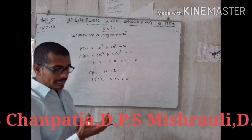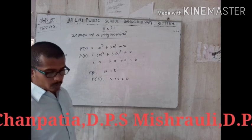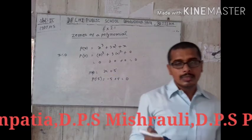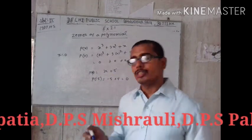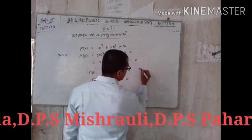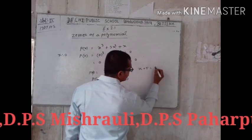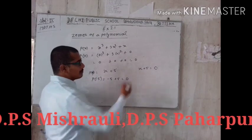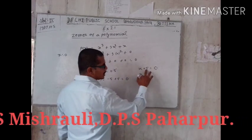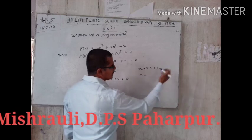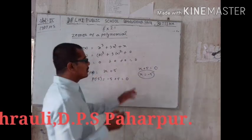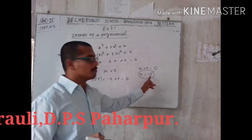So how to find out the zero? Whatever polynomial is given, just equate it with zero. For example, x + 5 is given, so equate x + 5 with zero and find the value of x. Here x = -5, because +5 goes to the other side and becomes -5. So the zero of this polynomial is -5.